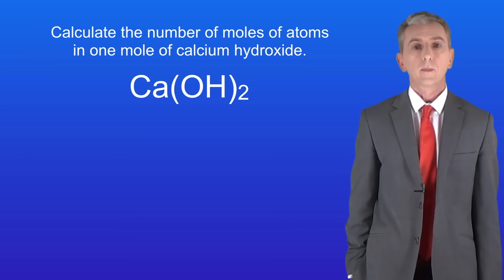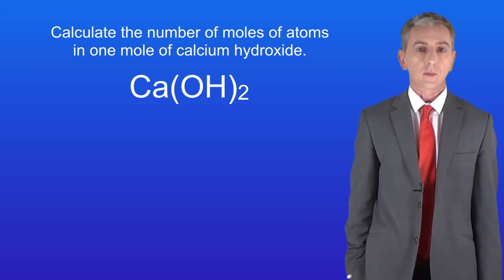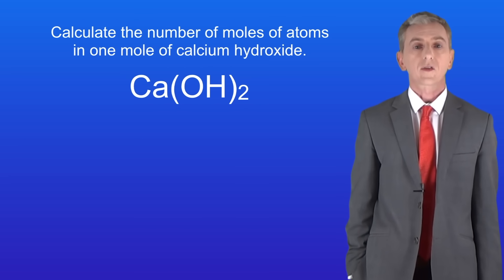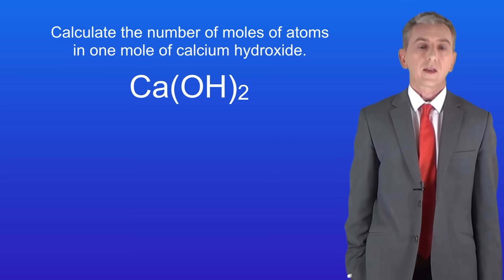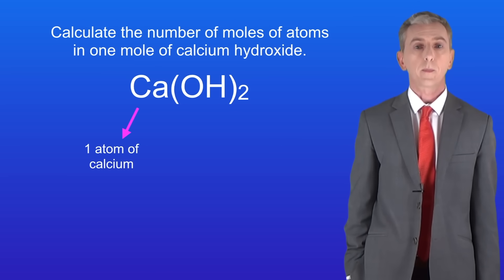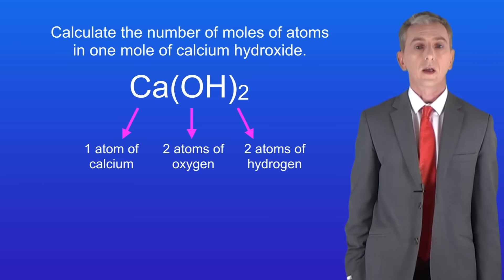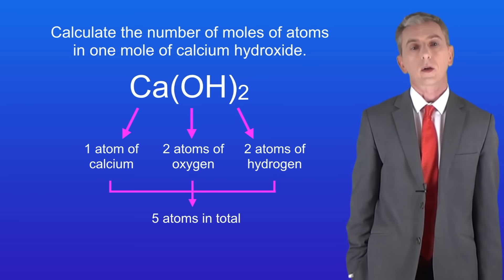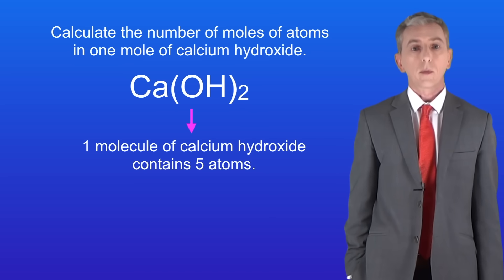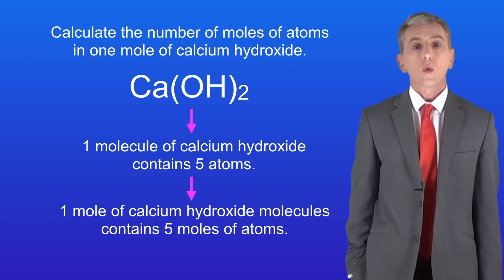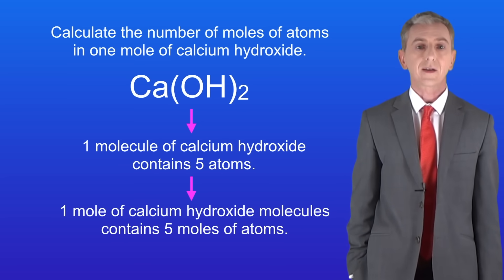Try this one. Calculate the number of moles of atoms in one mole of calcium hydroxide. Pause the video now and work this out. Okay, we can see that one molecule of calcium hydroxide contains one atom of calcium, two atoms of oxygen, and two atoms of hydrogen, so five atoms in total. So we know that if one molecule of calcium hydroxide contains five atoms, then one mole of calcium hydroxide must contain five moles of atoms.